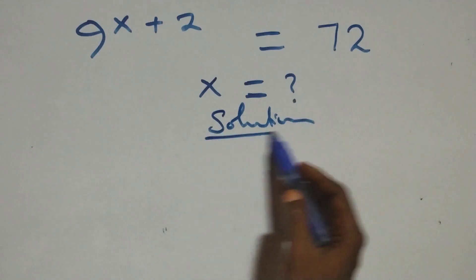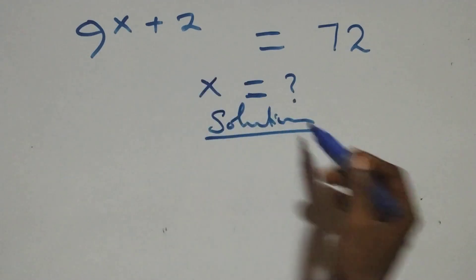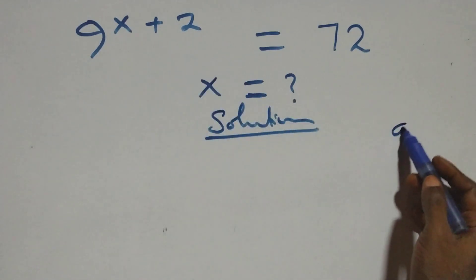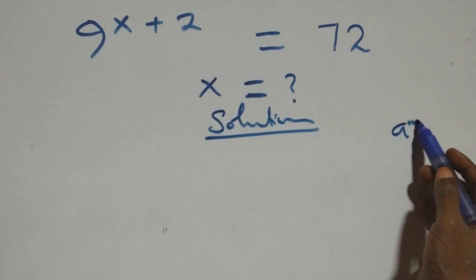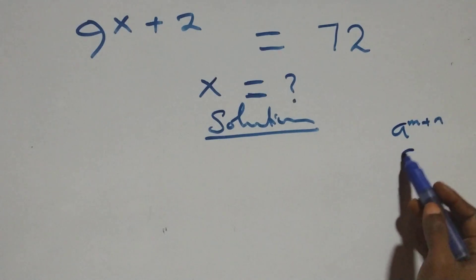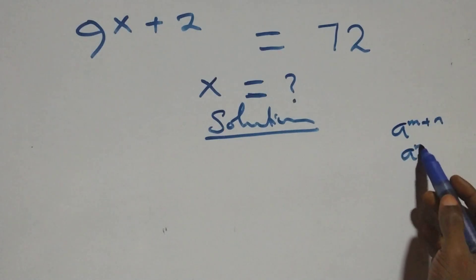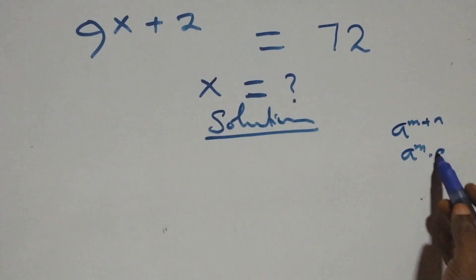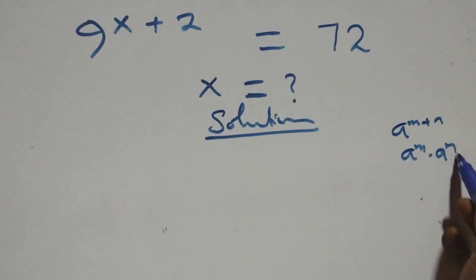What we have here: this follows when we have a raised to power n plus n, which is the same thing as a raised to power n times a raised to power n.